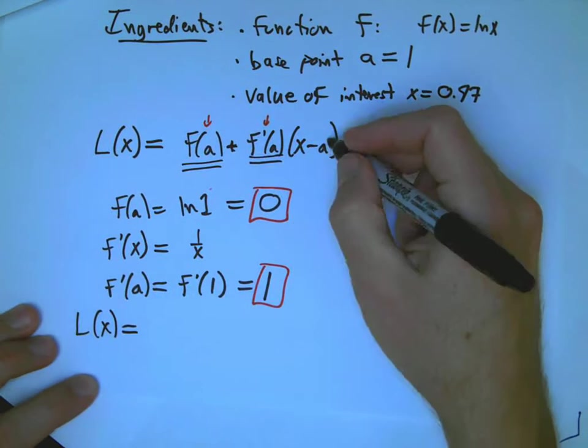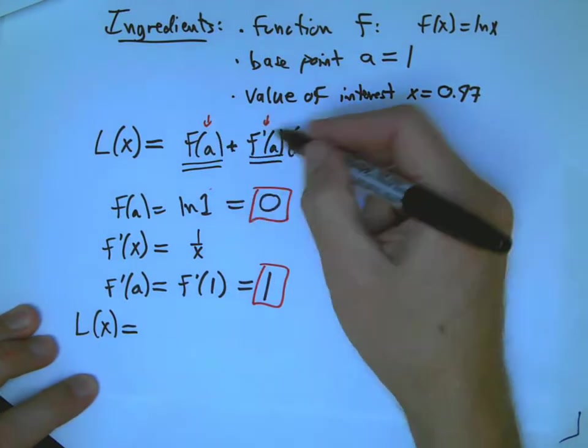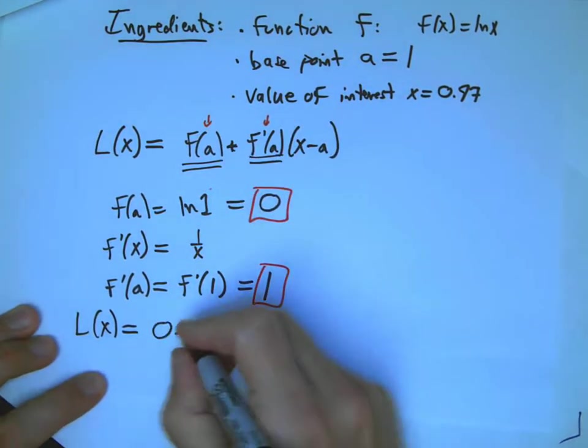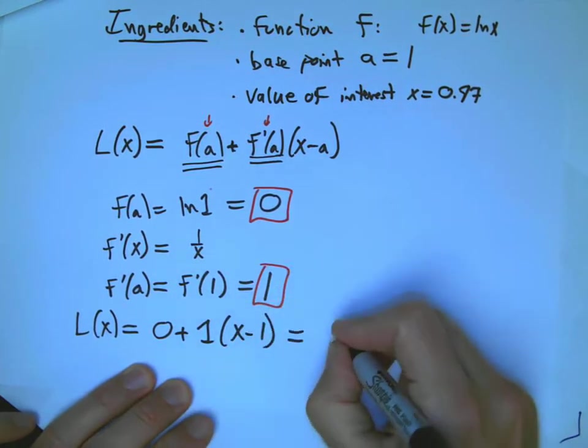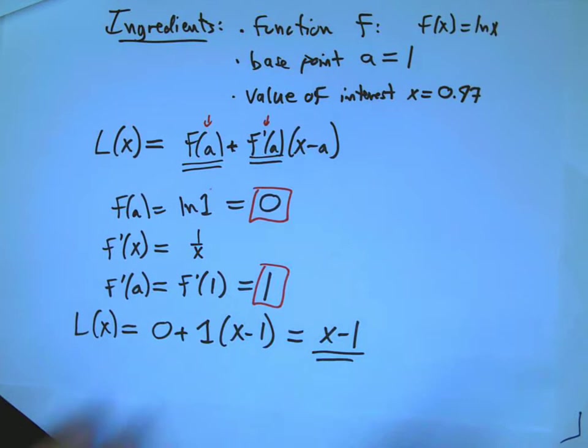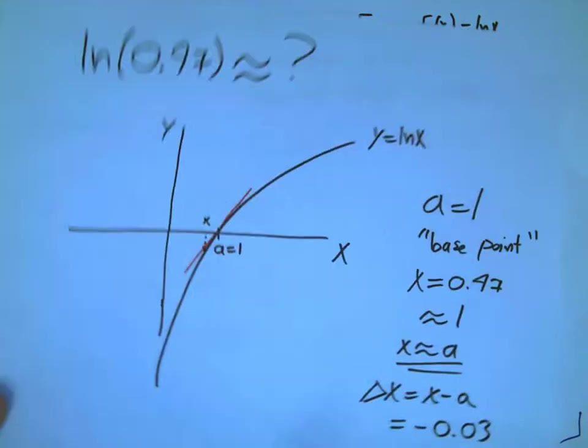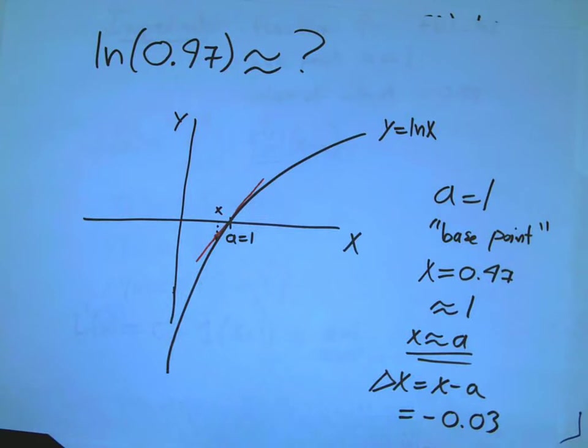So, now I can plug those in. A is 1, this is 0, this is 1. I've got about as simple as it gets. So, that's the linearized version. That is exactly the equation for this red line, the tangent line.